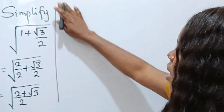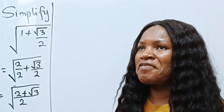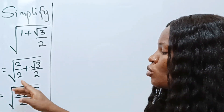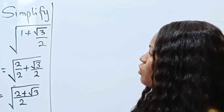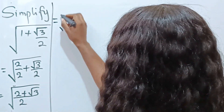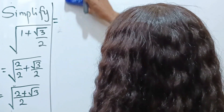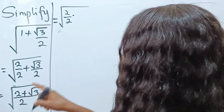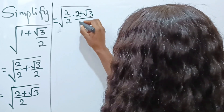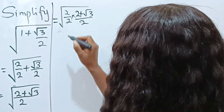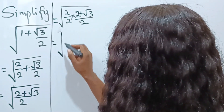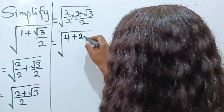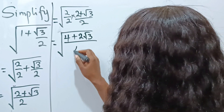Now I want to introduce something because the goal is to simplify. I'll introduce 2 divided by 2, since 2 divided by 2 still equals 1, so I haven't changed anything. So we can write this as the square root of 2 over 2 multiplied by (2 plus root 3) over 2. Turning this to multiplication: 2 times 2 gives 4, 2 times root 3 gives 2 root 3, and the denominator 2 times 2 gives 4.